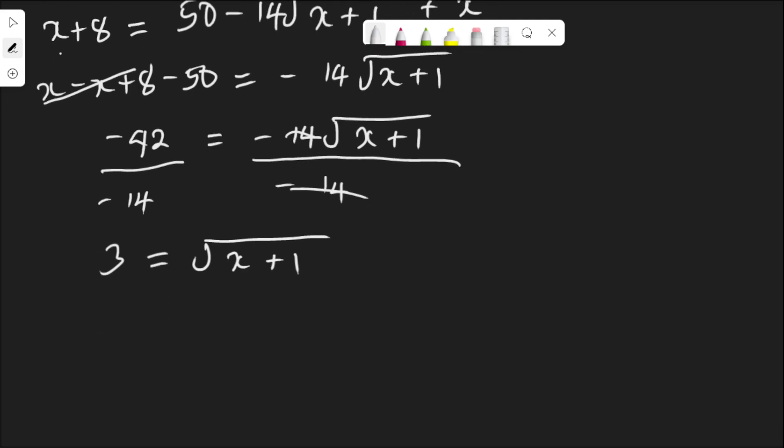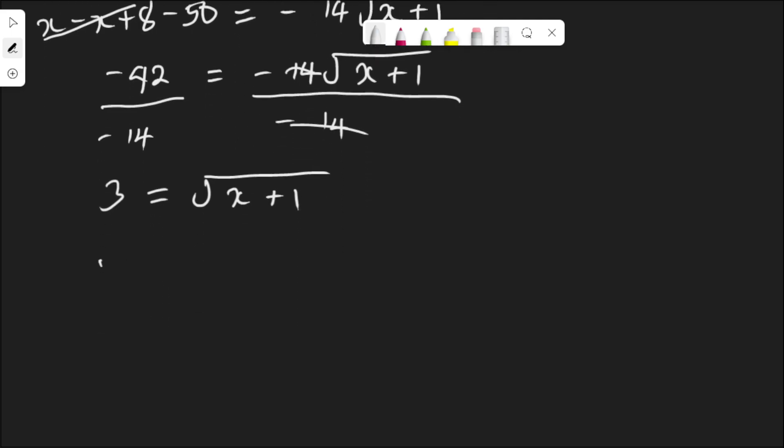Again, we need to square both sides to clear this radical. 3 squared equal to, when I square this, x plus 1 squared. 3 squared is 9, and root x plus 1 squared is x plus 1.